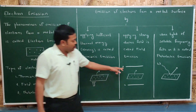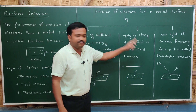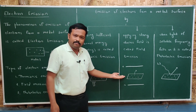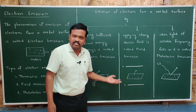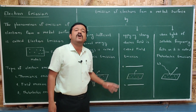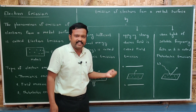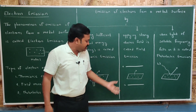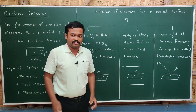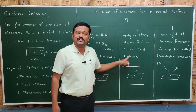You can also emit electrons from a metal surface by applying a strong electric field, and that process is called field emission. If you take a metal plate and place it in a strong electric field, these electrons are attracted towards the positive plate and come outside. The number of free electrons depends upon the strength of the electric field and is directly proportional to it — if the electric field increases, the number of electrons emitted also increases.